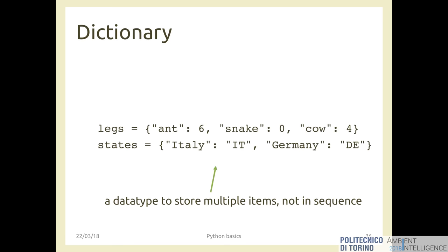Dictionaries are a data type to store multiple items like lists, but the elements are not in a sequence — they come in pairs. The first is a key and the second is the value associated with that key. They are not ordered, so you cannot take it for granted that an element will always be in the same position. It's the element with key Italy and the element with key Germany — not first and second.